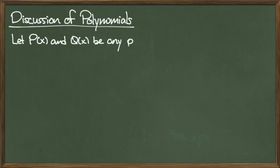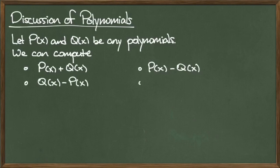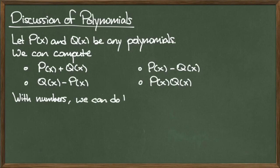So we know that given polynomials P and Q, we can add them, we can subtract them from one another in different orders, and we can multiply them. Clearly we can do these same things with numbers. We can add, subtract, and multiply. But we haven't talked about division yet.